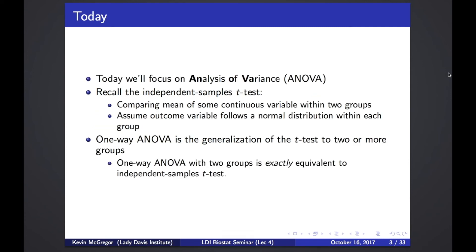Today we're going to go on to the analysis of variance, more commonly known as the ANOVA. This is something absolutely essential for you to know — it's used very, very often in biomedical sciences. If you recall from our independent samples t-test, we were comparing the mean of a continuous variable with respect to a binary categorical variable, comparing the mean within two different groups, assuming the outcome follows a normal distribution within each group.